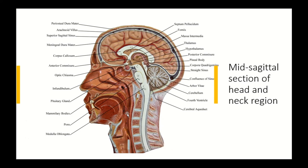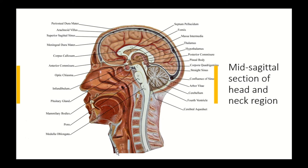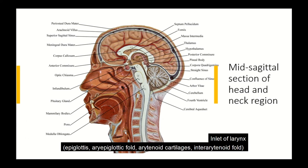The oropharynx continues down as the laryngopharynx, which is the posterior relation of the larynx. We can see the epiglottis connecting to the thyroid cartilage, and beneath the thyroid cartilage, the cricoid — a ring-shaped cartilage, with its narrow anterior arch and broad posterior lamina visible in mid-sagittal section. The ariepiglottic fold runs between the epiglottis and the arytenoid cartilages sitting on top of the cricoid. Together, the epiglottis, ariepiglottic folds, and arytenoid cartilages form the margins of the inlet of the larynx.